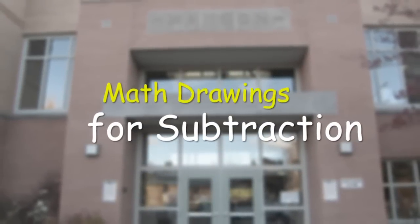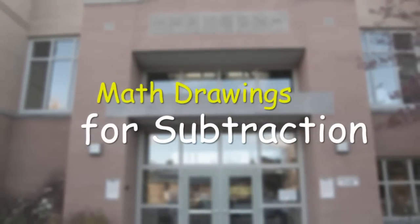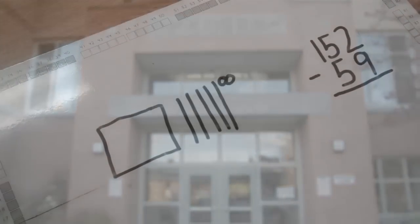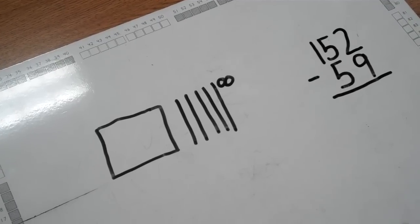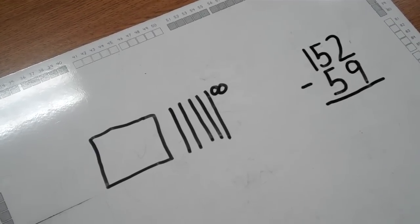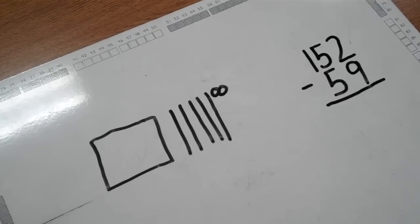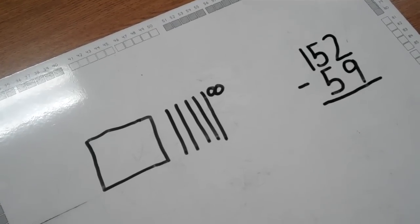Starting in second grade, students learn multiple strategies for subtracting multi-digit numbers. We use a box to represent 100, the stick or line to represent 10, and the circle to represent 1.